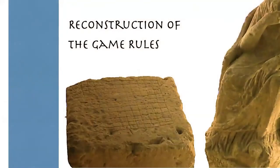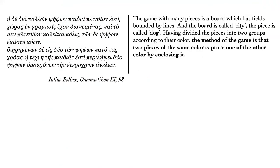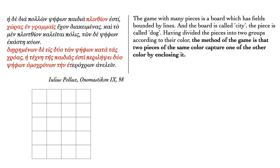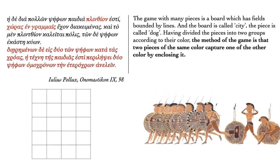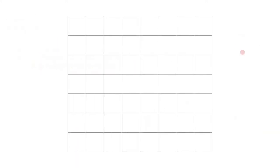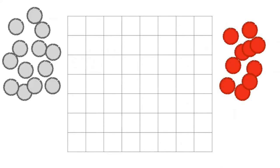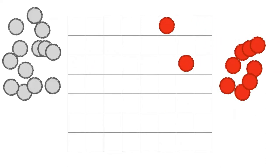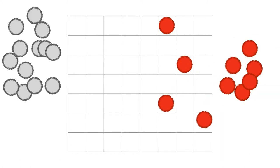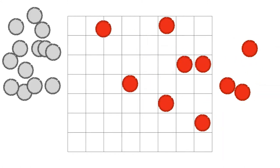So let's try to reconstruct the rules of this game. It's Julius Pollux who called the board game Plintheon, a term which fits perfectly with the fact that the board consisted of squares. He says that the method of the game is that two pieces of the same color capture one of the other color by enclosing it. So probably at the beginning of the match the board was empty, and after the placement of the counters a piece orthogonally enclosed between two enemies was eliminated.